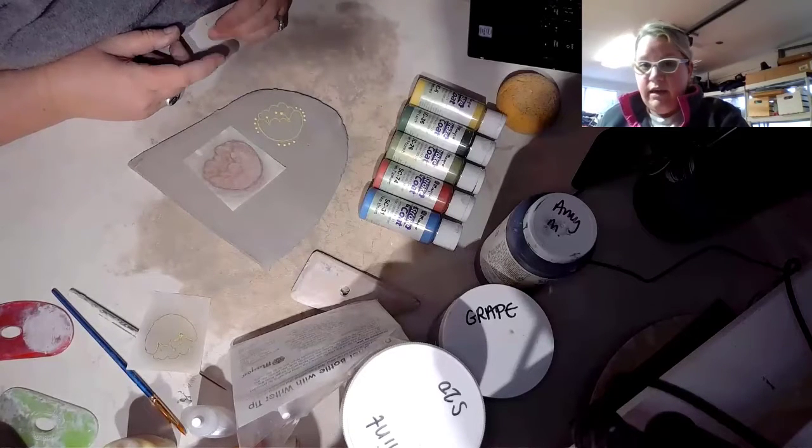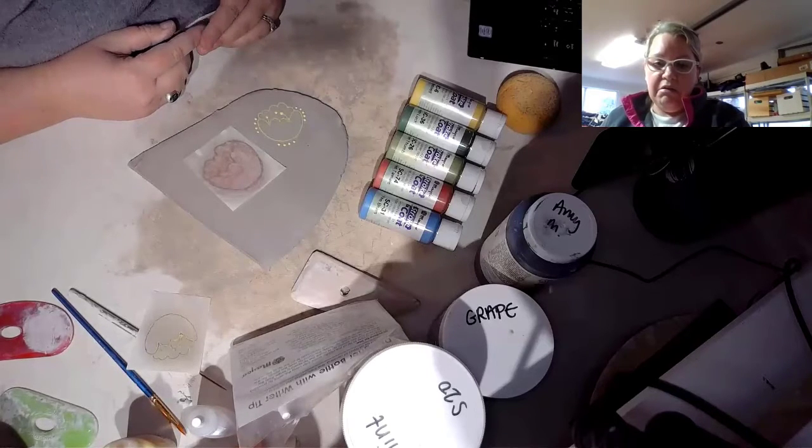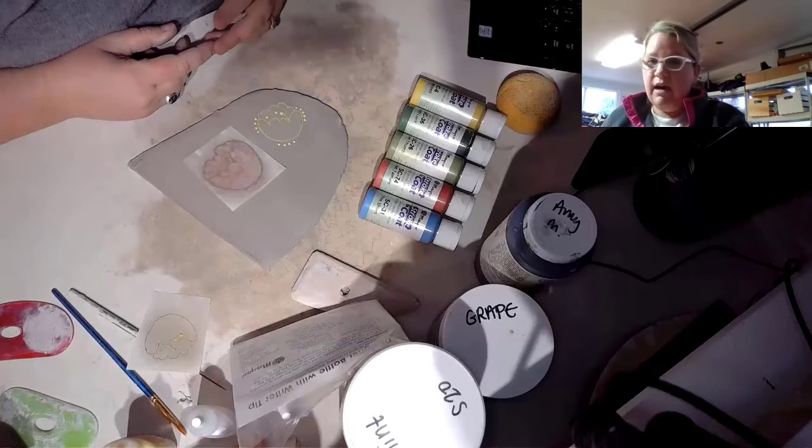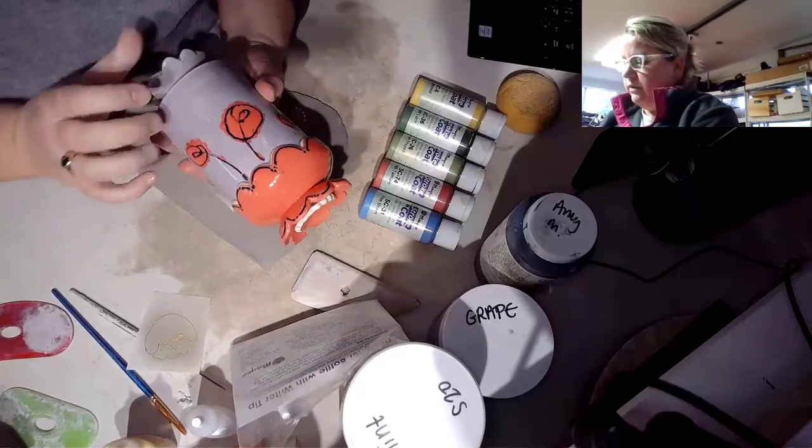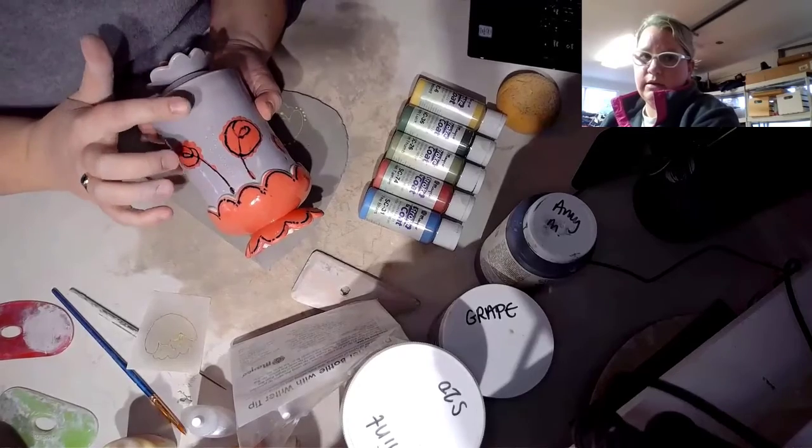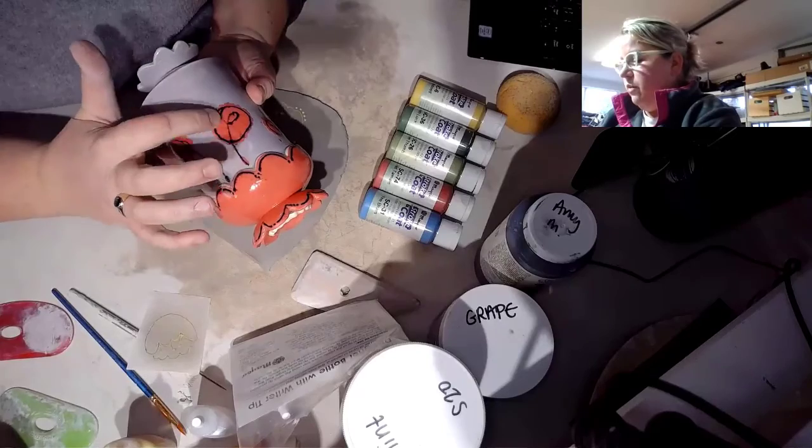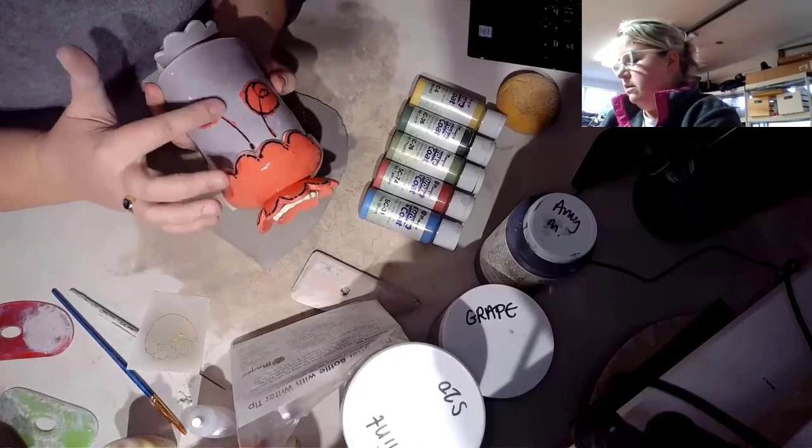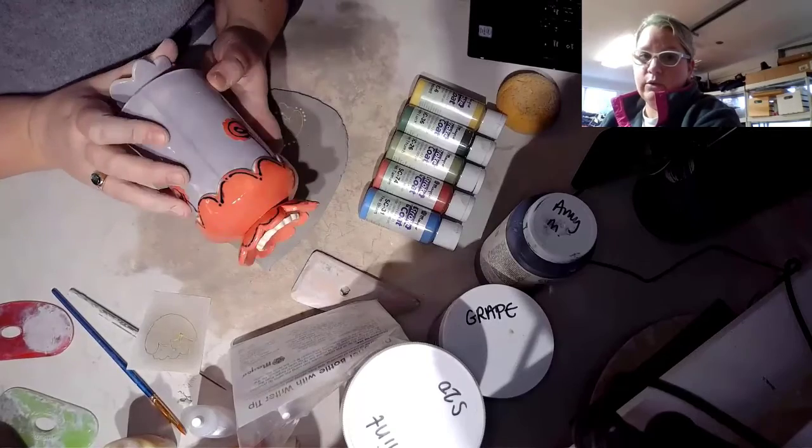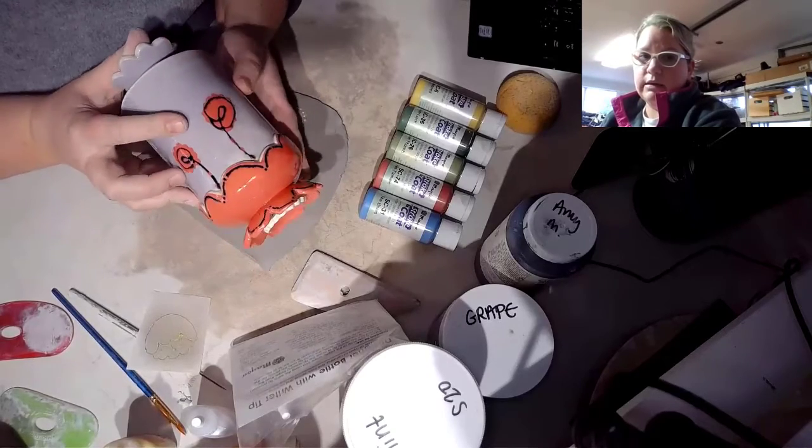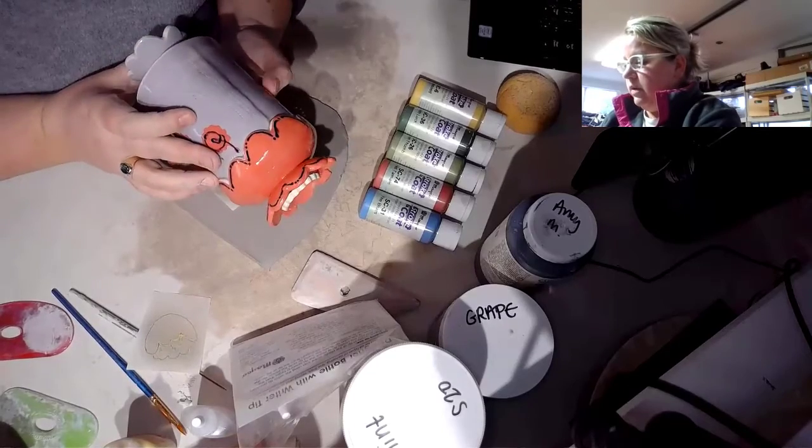And then, after that, then, like I said, then you could go back and you could apply other celadons or anything like that. I know, you know, for instance, if I wanted to not have the purple background, this is a slip. So, you know, you could almost, after you bisque fire, you could wax over this and then dip it into your powder's choice or your celadons or something like that. So, there's lots of versatility for what you can do. I would just, depending on the age group that you all teach, you know, have them experiment.